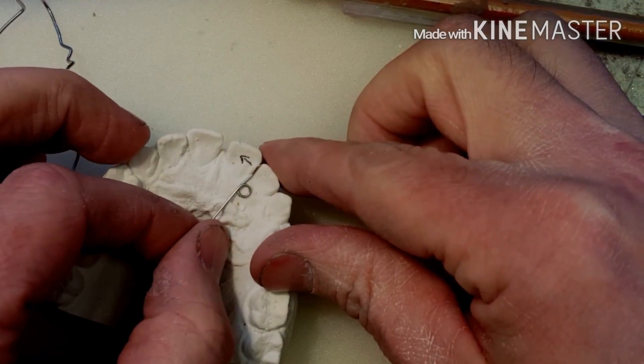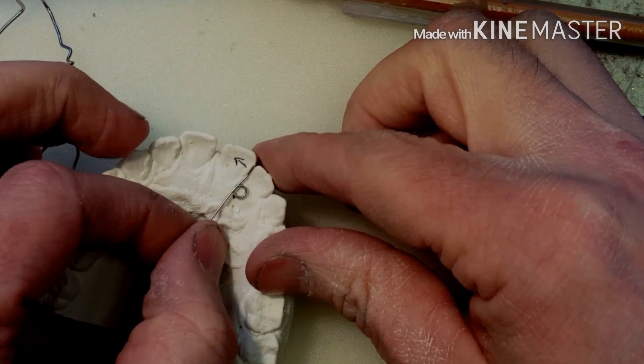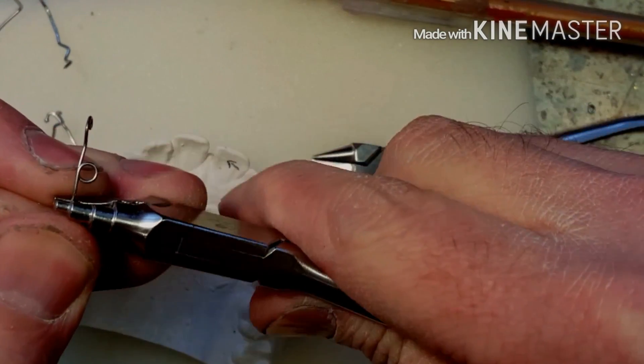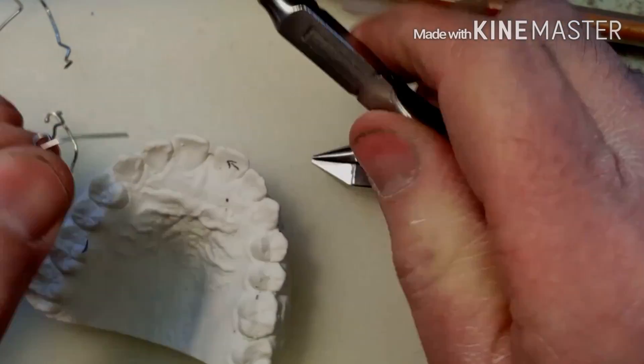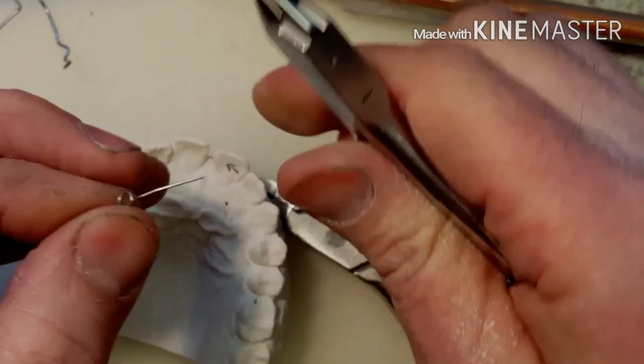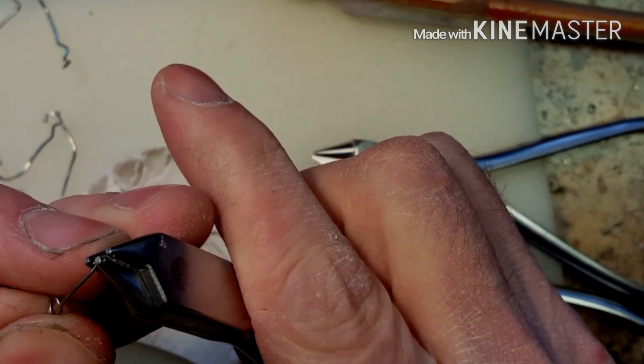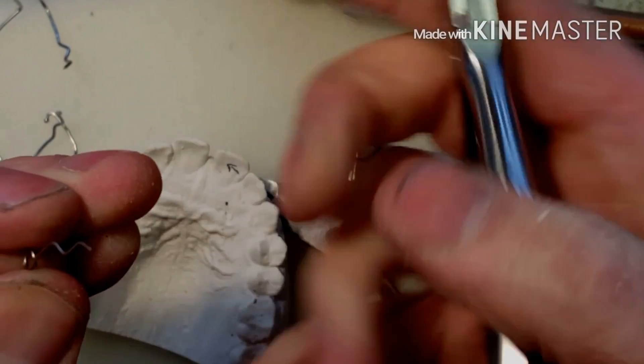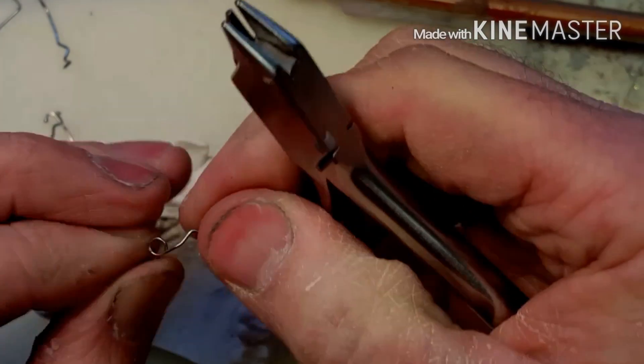I drew a little line on the model to show you which way I want the forces to be pushed. By twisting the spring to the right side, you can adjust the spring and twist it left. I'm going to put a couple of zigzags in there just to get some retention in the acrylic.